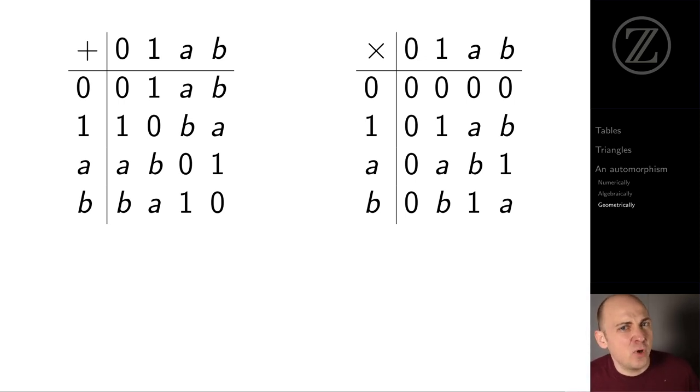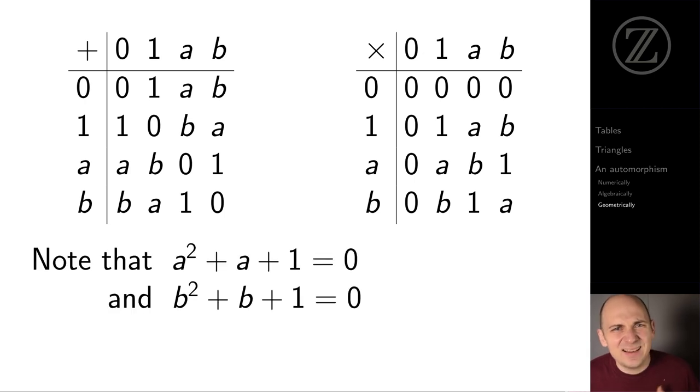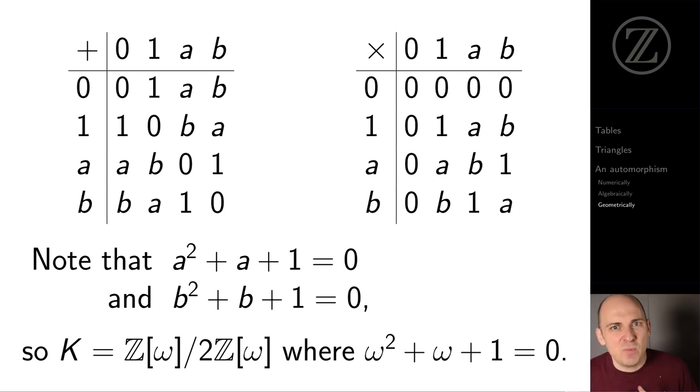We can also see this geometrically. Here are the addition and the multiplication tables for K, the ones that we found before. And a bit of computation reveals that a squared plus a plus one is zero. And similarly, b squared plus b plus one is also zero. So it turns out that K, this field of order four, is Z bracket omega modulo two. And here, omega is a primitive third root of unity. Omega squared plus omega plus one equals zero.